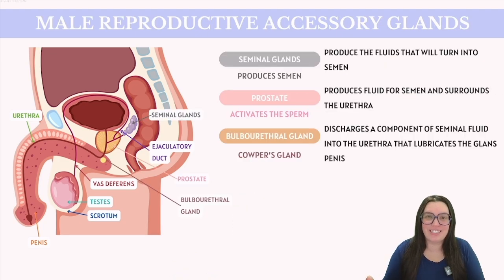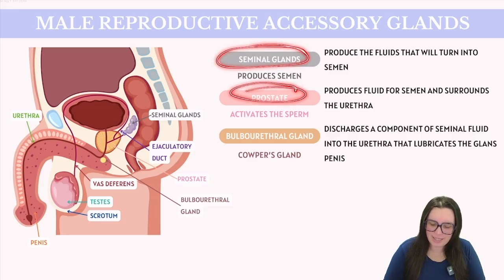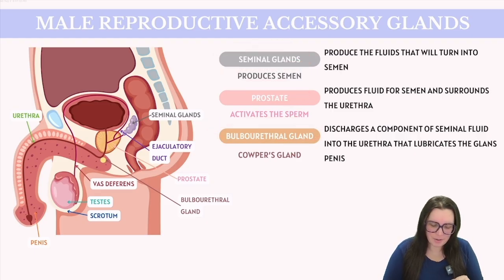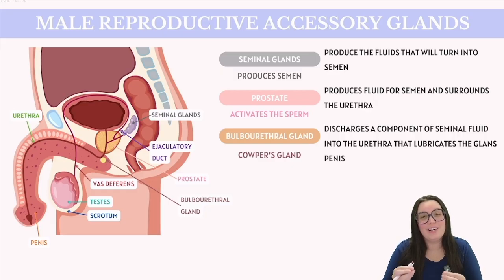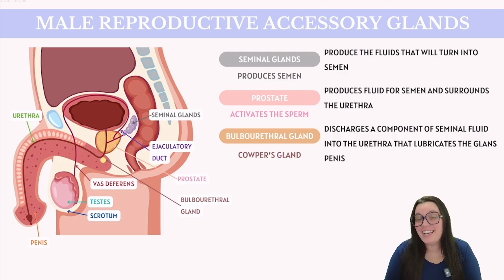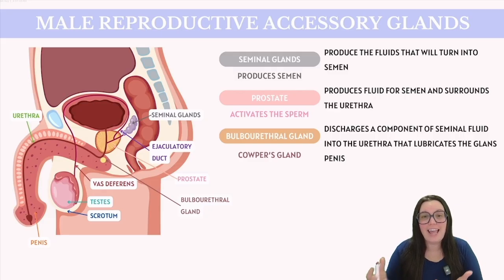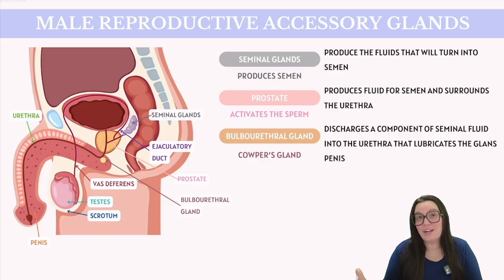In addition to the gonads and external genitalia, the male reproductive system includes accessory glands such as the seminal glands, the prostate, and the bulbourethral glands. Seminal vesicles are glands located on the surface of the bladder that secrete a fluid known as semen. It's important to note that semen does not contain sperm cells; instead, it mixes with sperm cells during ejaculation in the ejaculatory duct. Semen enhances sperm motility and fertilizing ability by providing a nutrient-rich medium that suppresses the immune response in the female reproductive tract, destroys bacteria, and aids sperm in adhering to the vaginal walls. Semen comprises the bulk of the ejaculate by volume.